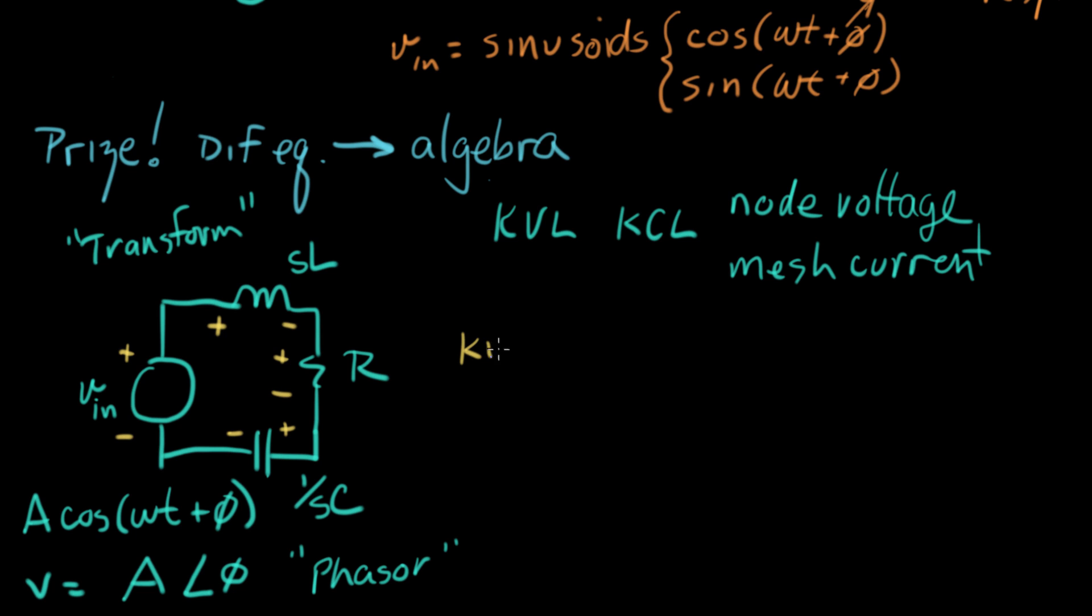I'm just going to write KVL around this loop. And what I get is that V in is equal to the voltage across the inductor plus the resistor plus the capacitor. And I can write it like this. I can write SL times I plus R times I plus one over SC times I. And if I can write that again, I'll write that one more time. It's I times SL plus R plus one over SC. All right, that was a straightforward application of Kirchhoff's law.